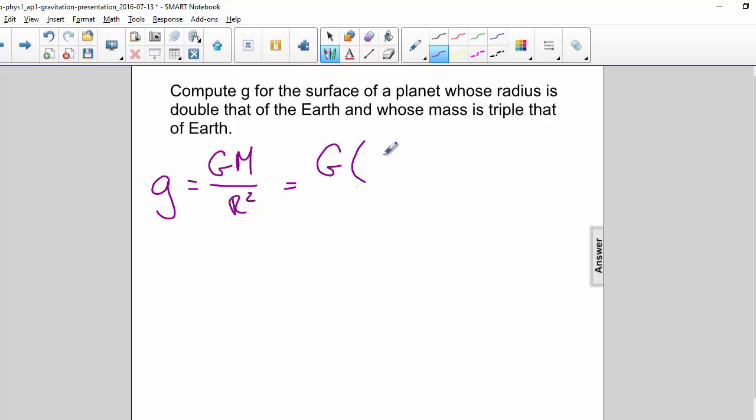In this case, the m is three times the mass of the Earth, and the radius is twice the radius of the Earth.